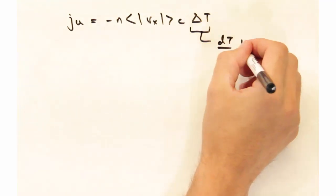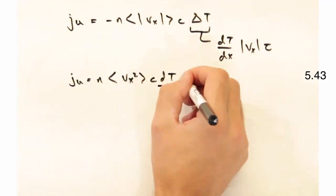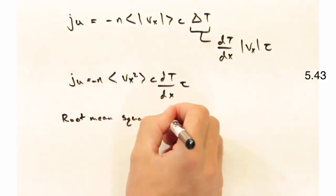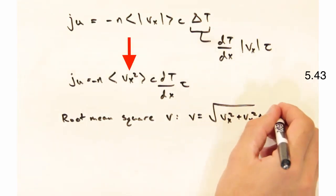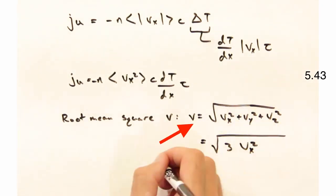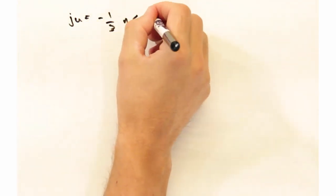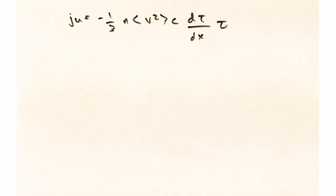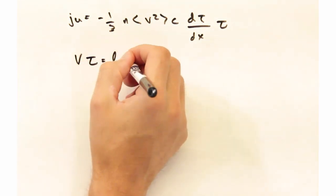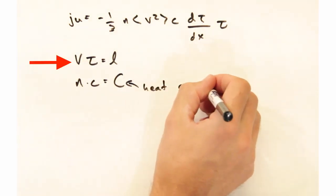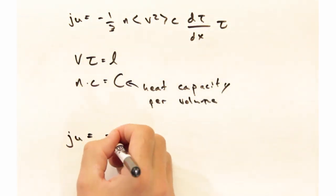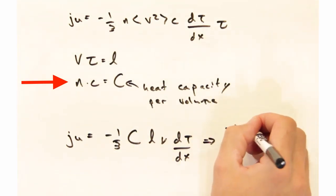Substituting this back into our energy flux expression, we get the following. The first term we're going to pick out here is this v sub x term. Let's put that instead in terms of the root mean square velocity v. On average, we expect the x, y, and z components of the velocity to be equal. Moving along, we can substitute that in to our energy flux expression. We can also take that tau and one of our velocity terms, recast that as l, and we can take our particle density and our heat capacity per particle and then write that as heat capacity per volume.